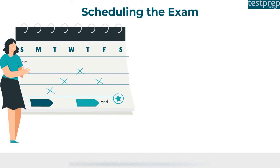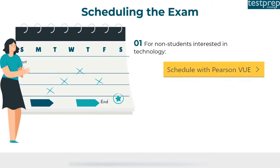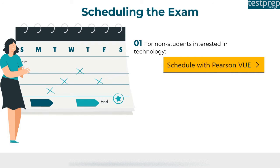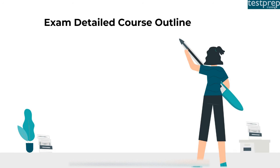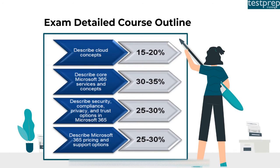To pass the exam, a minimum score of 700 on a scale of 900 is required. The exam costs 99 US dollars plus additional taxes. Candidates can take the exam in English or Japanese. Microsoft provides two scheduling options: non-students schedule with Pearson VUE, and students or instructors schedule with Certiport.